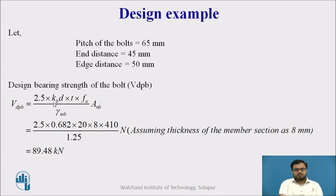Now then we will determine the strength in bearing given by 2.5 kB D into T into FU divided by gamma MB into ANB. Now to determine this kB, we have to determine pitch, edge distance and end distance. Normally pitch equal to 2.5 into nominal diameter of bolt and end and edge distance for machine flame cut edges, it is equal to 1.5 gross diameter of bolt. And for hand flame cut edges, it is equal to 1.7 into gross diameter of bolt.